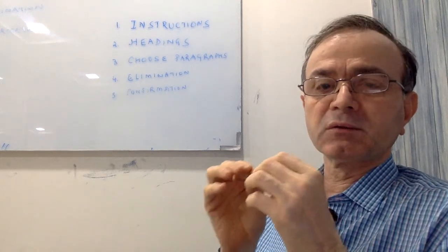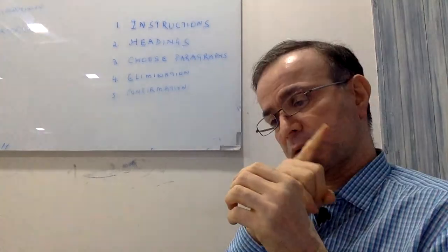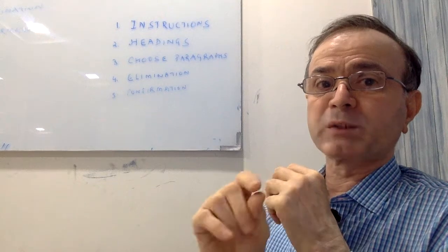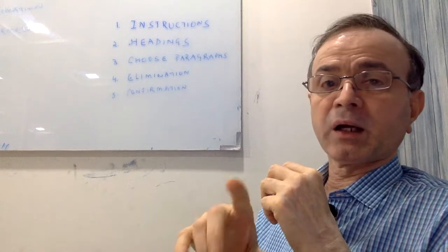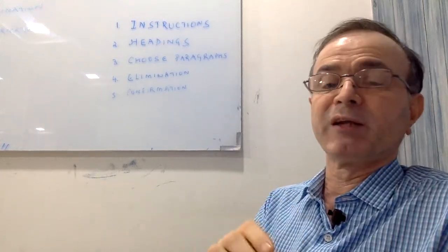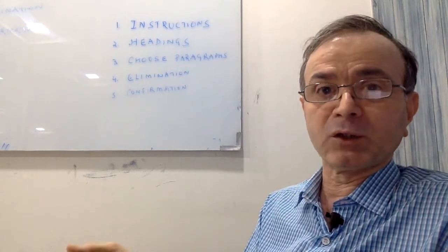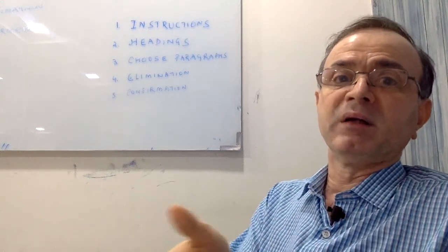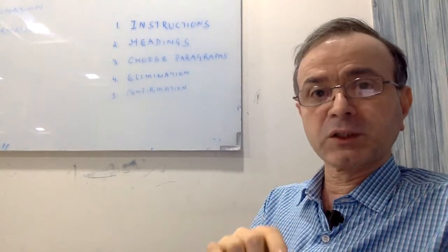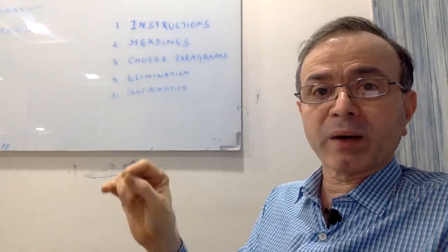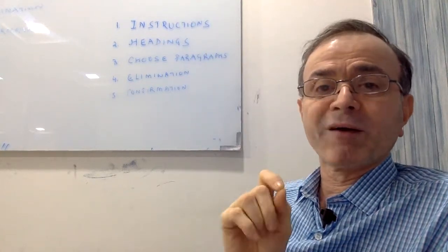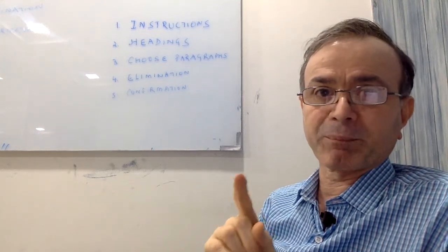The first step is to look at the instructions. Some reading passages will have already done an example for you, and you need to be aware of which paragraph the example has already been done for — sometimes paragraph A, sometimes C or D. Read the instructions: does it say choose a heading for every paragraph, or choose from B to F, or that D is already done for you? If you don't read the instructions, you'll waste time doing the example paragraph and mark it in the wrong place on the answer sheet.